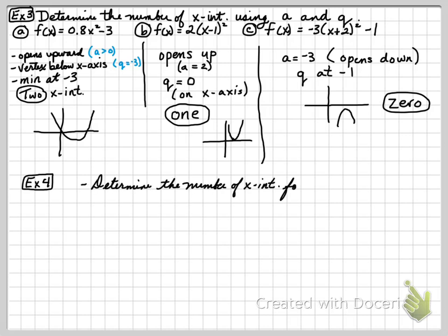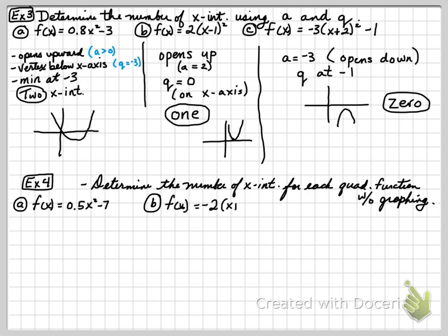Example 4. Let's determine the number of x intercepts for each quadratic function without graphing. Same instruction as before. If f of x is 0.5x squared minus 7, we have these three. A is 0.5, it opens up. Q is negative 7, there's got to be 2.